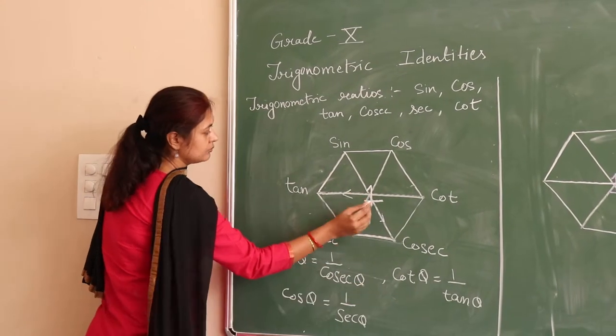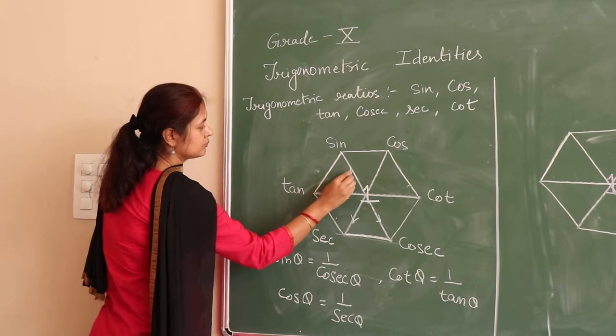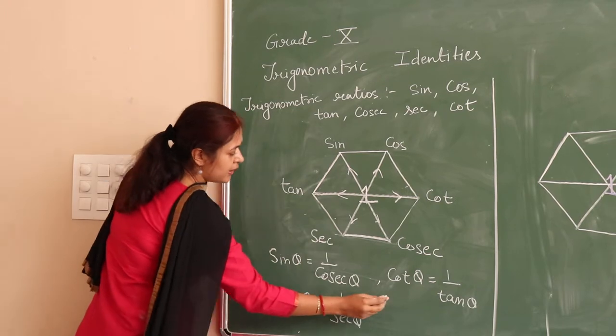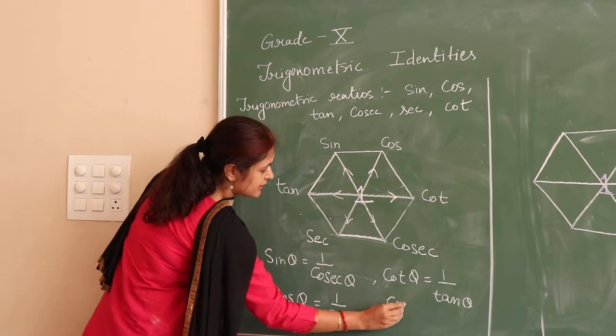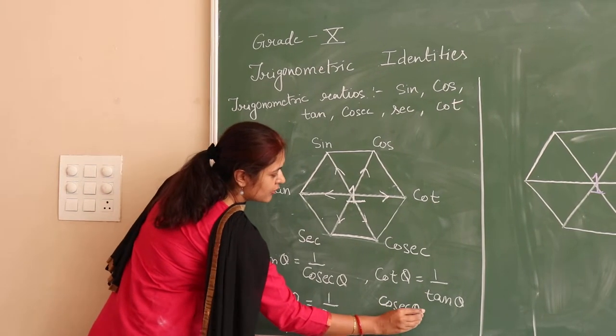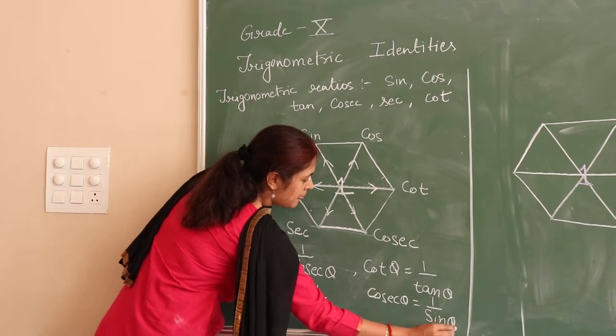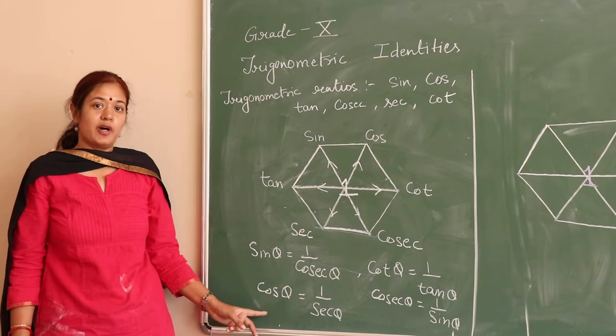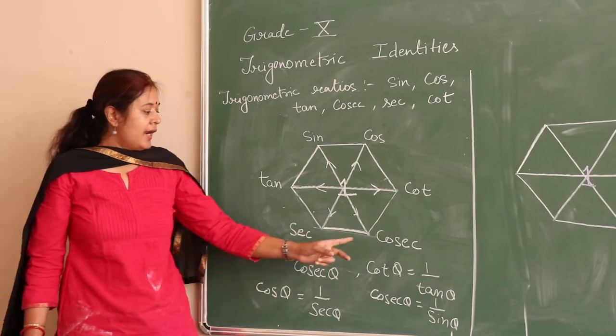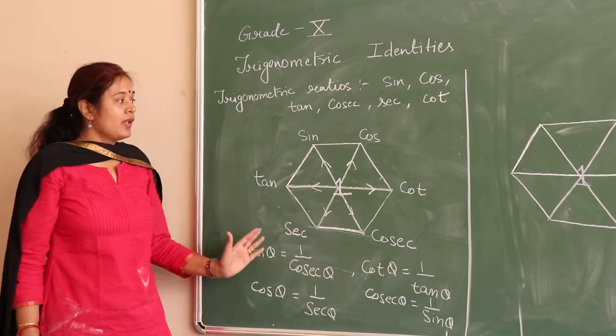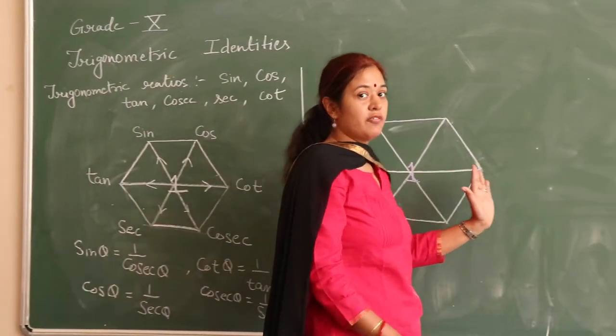Similarly we can analyze the other identities also. Like cosec theta is equal to 1 upon sin theta, and sec theta is equal to 1 upon cos theta, and tan theta is equal to 1 upon cot theta. Now we are regarding the next set of identities.